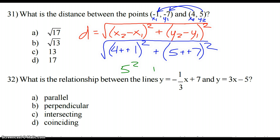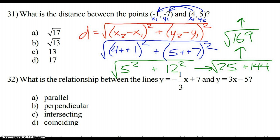5 squared plus 12 squared. Or 5 times 5 is 25, and then 12 times 12 is 144. So we're going to add those together under a square root. I'm going to go up. So we actually have 169 under a square root, which comes out to 13, because 13 times 13 is 169. So we're looking at C for number 31.